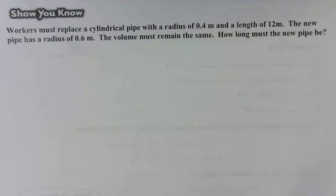For this show you know, workers must replace a cylindrical pipe with a radius of 0.4 meters and a length of 12 meters. The new pipe has a radius of 0.6 meters, but the volume must remain the same. How long must the new pipe be?